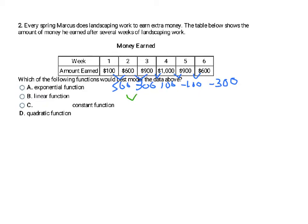300 minus 500 is negative 200. 100 minus 300 is negative 200. It could be quadratic. Negative 100 minus 100 is negative 200. And negative 300 minus negative 100 is also negative 200. If you get confused with the negative symbols, use a calculator to check yourself. The second differences all match, so that's going to be quadratic.